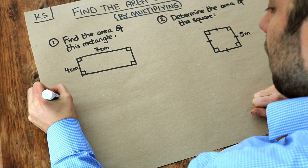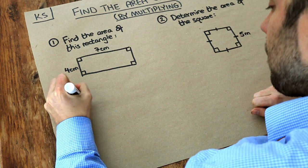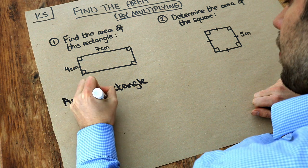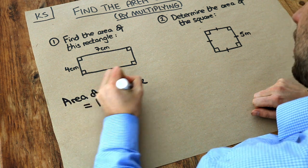And there's a very simple formula for the area of a rectangle and I will write it down for you. You just simply do the length multiplied by the width.